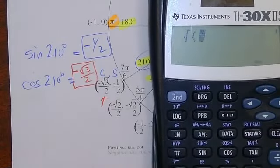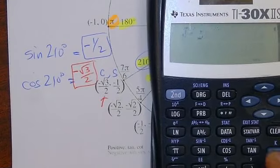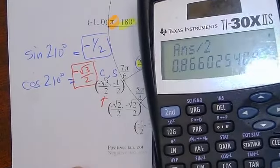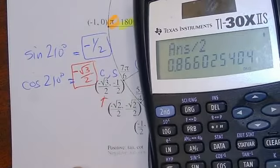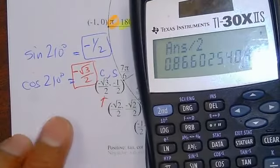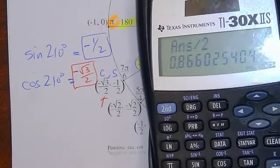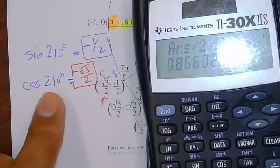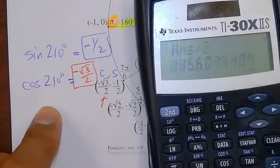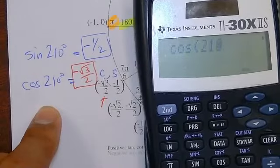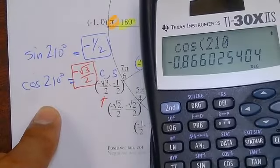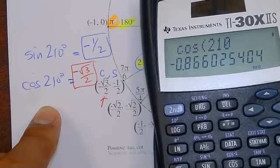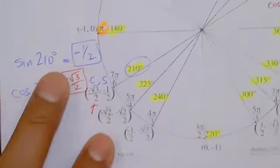I told you the answers are all here. Let's check: root 3 over 2 — square root of 3 divided by 2 — equals approximately 0.866. So cosine of 210 should give me negative 0.866. Let me put cosine of 210 in the calculator. And yes, it is — there it is.